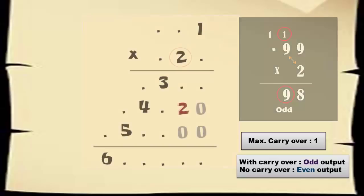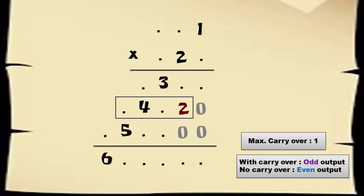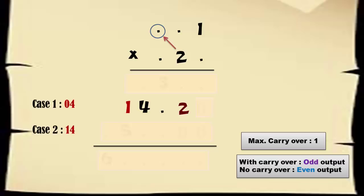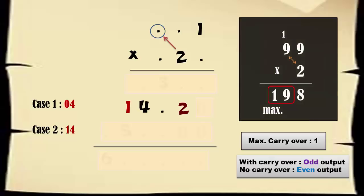Coming back to the puzzle, now concentrate on the second row. 2 multiplied by the third digit gives an output as either 4 or 14. It can't be further higher such as 24 because we have seen that the maximum possible value we can get is 19.